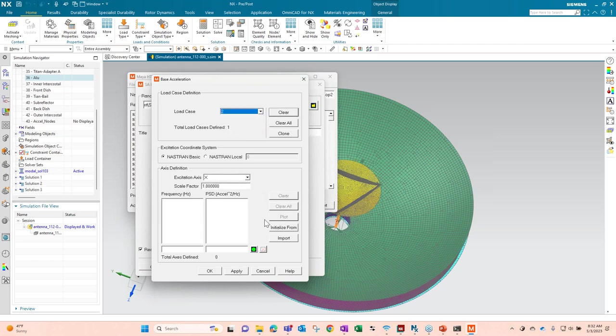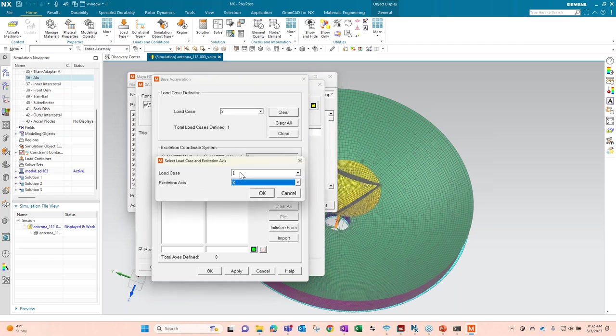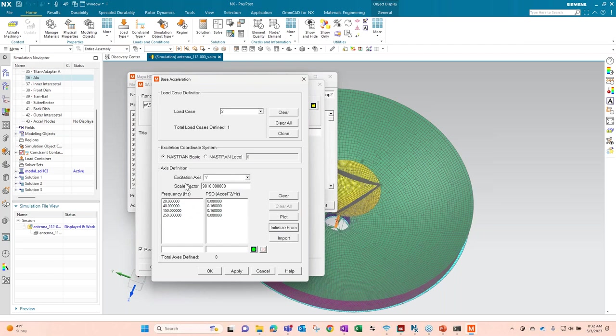I'm going to go ahead and create another load case. I want it to be in the Y direction. We'll actually just initialize it from the other one. So I don't have to re-input everything. You can also put the PSD in point by point if you would like. And then we'll finish it out with, we've done X and Y. We might as well do Z.